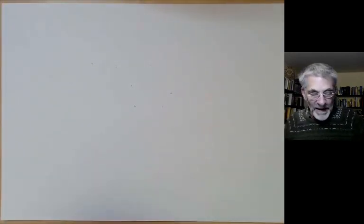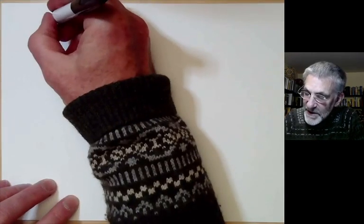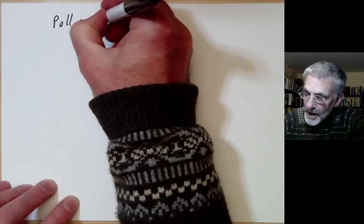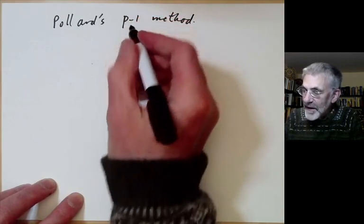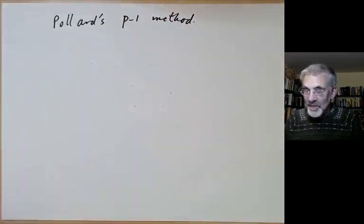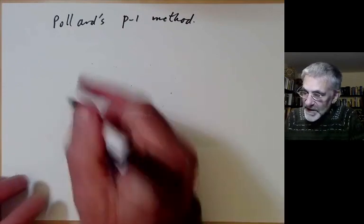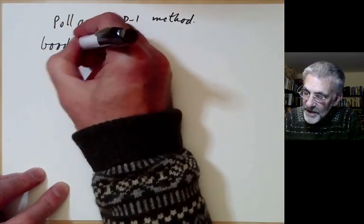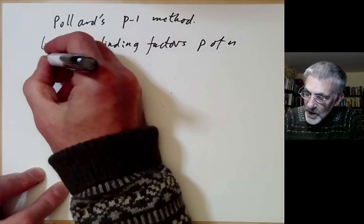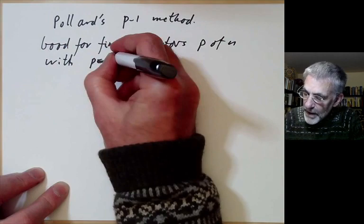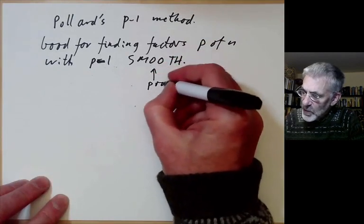Now I have a quite different method, also due to Pollard, for factorizing numbers. This is called Pollard's P-1 method. The terminology is a bit confusing, because that is a letter P, and it shouldn't be confused with the rho that is Pollard's rho method. This is actually not a general purpose method. It's good for finding factors p of n with p-1 smooth. Well, what does smooth mean? It means it's a product of small primes.